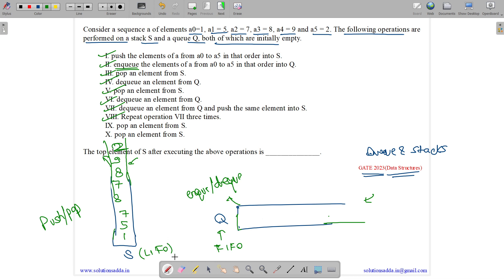Pop an element from S. So 2 will be popped out. Another pop an element from S. So 9 will be popped out. So we have done this. The top element of stack after executing the above operations. So top is 8. So answer is 8.